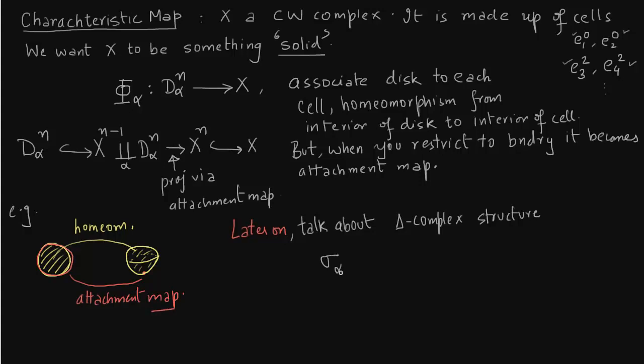We will talk about it later, but the idea is this: the characteristic map will be something like sigma_α, and this map is basically for space X. You will have these delta complexes, and you will have maps from delta_n to X. There is a description given on page 103 of Hatcher and you can read that. But the most important criteria to remember is that this is nothing but a characteristic map.